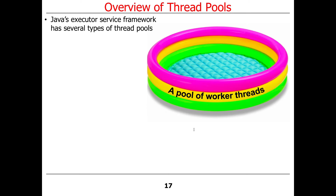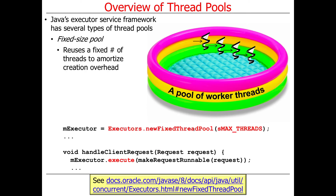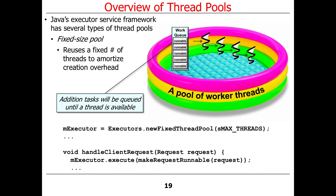The Java Executor Service Framework has several types of thread pools that it supports. It has what's called a fixed size pool, where you have a fixed number of threads you create when you make the pool. And then when you execute a request — when you give work to the pool — if you have more work than there are threads in the pool, they're simply queued up to be run when one of the threads in the pool is available to do something new.